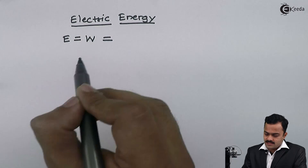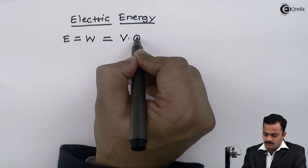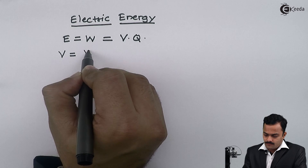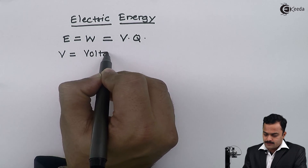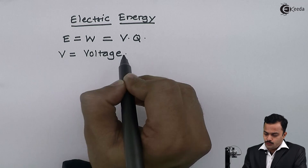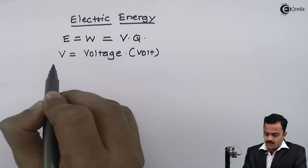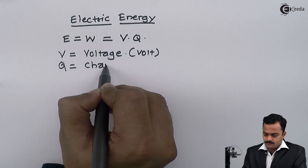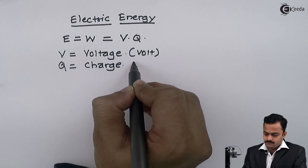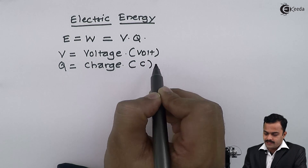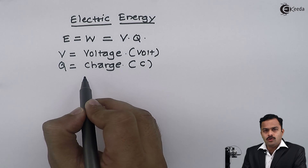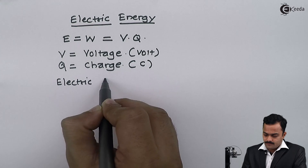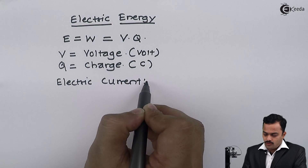Electric energy is given as V into Q, where V is the potential or voltage and its unit is volt, and Q is the charge whose unit is Coulomb.